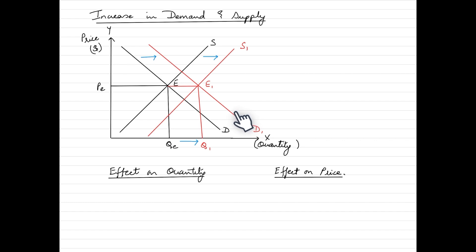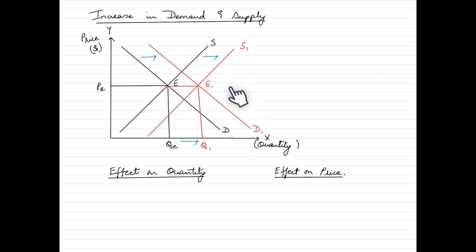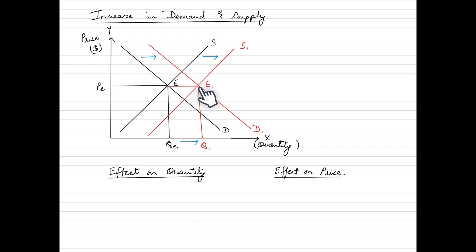When both demand and supply increase, both curves shift to the right — marked with a blue arrow. Demand shifts from D to D1 and supply shifts from S to S1. The intersection of these two curves at E1 is the new equilibrium point, where we can see there is an increase in quantity from Qe to Q1.